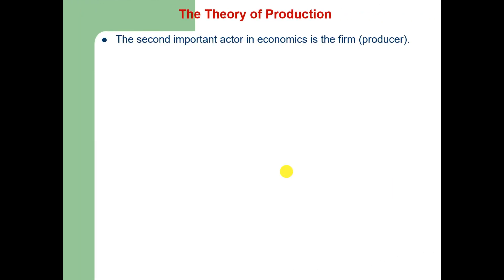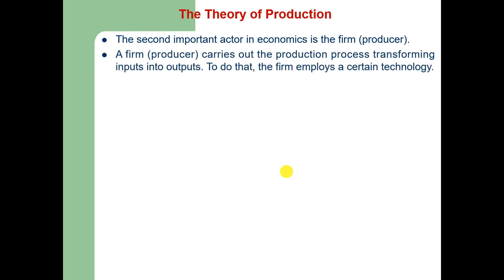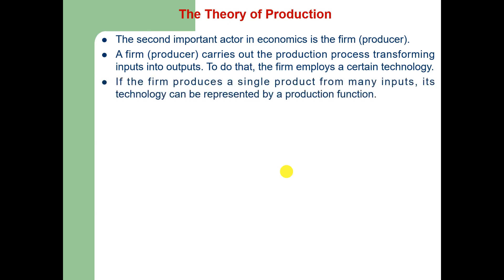First of all, I would like to say that the second important actor in economics is the firm or producer. Just like we have a consumer or consumption as the first actor, this is the second actor in economics. A firm is a business entity which combines various goods and services to produce a certain amount of output with the sole aim of earning profit, and to do that it implies certain technology. If the firm produces a single output from a number of inputs, its technology can be represented by a production process.